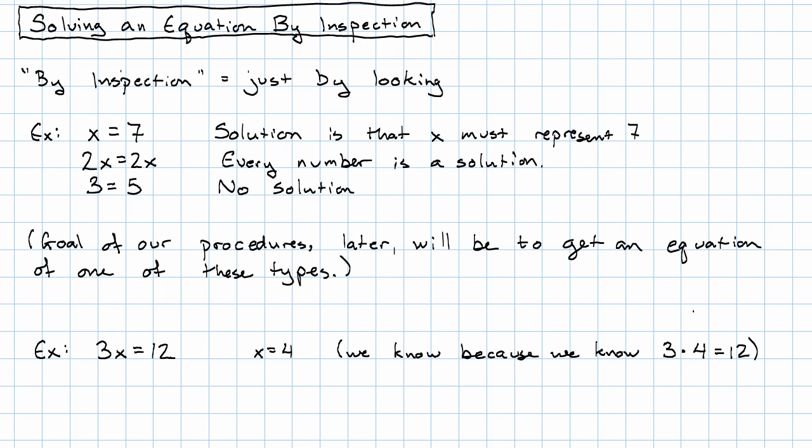4 is the only number that when we multiply it by 3, we get 12. When we multiply 3 by other numbers, we get numbers that are not 12. This is, in fact, the only solution.